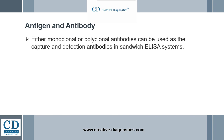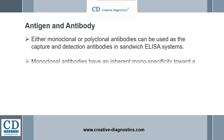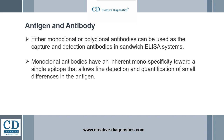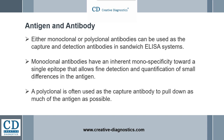Either monoclonal or polyclonal antibodies can be used as the capture and detection antibodies in sandwich ELISA systems. Monoclonal antibodies have an inherent monospecificity toward a single epitope, allowing fine detection and quantification of small differences in the antigen. A polyclonal is often used as the capture antibody to pull down as much of the antigen as possible, while a monoclonal is used as the detecting antibody in the sandwich assay to provide improved specificity.